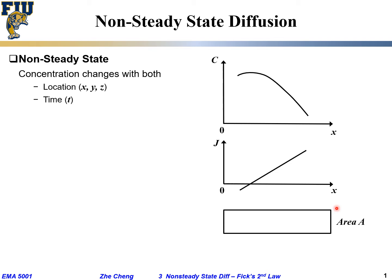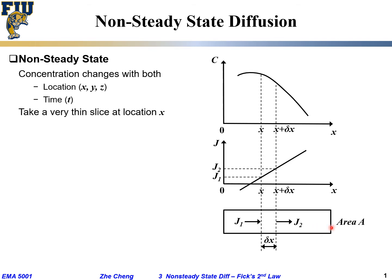Remember, flux is per unit area per unit time — how much stuff is flowing. We said it's no longer steady state: it changes with time and changes with location, even for simple linear geometry. To understand non-steady-state diffusion, people cut a thin slice out of this material — this one-dimensional material — whose thickness is Δx, a thin slice, which means Δx is a small number.